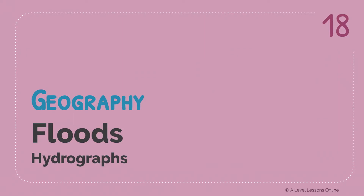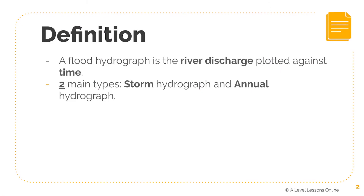So what's the definition of a flood hydrograph? A flood hydrograph is simply the river discharge plotted against time. Think of it as the volume of water a river can contain, plotted against time. Hydrographs will vary based on the amount of discharge and the time it takes before flooding occurs.